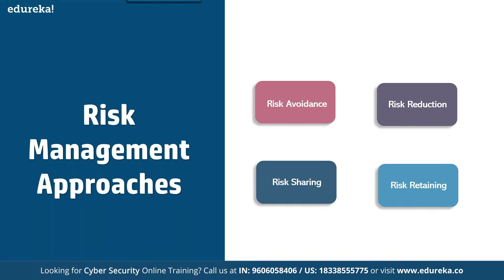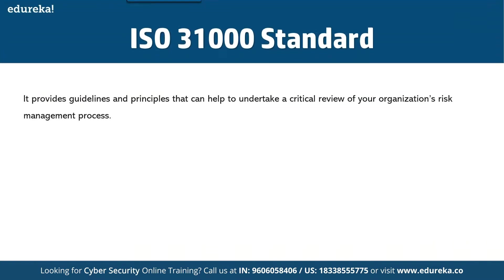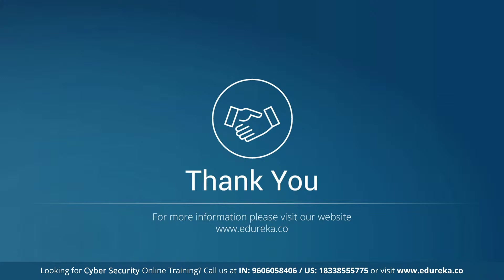ISO 31000 is an international standard published in 2009 that provides principles and guidelines for effective risk management. It outlines a generic approach to risk management that can be applied to different types of risk — financial, safety, project risk — and can be used by any type of organization. The standard provides a unique vocabulary and concepts for discussing risk management. I hope you have learned a lot. It was an immense pleasure — stay safe, goodbye.